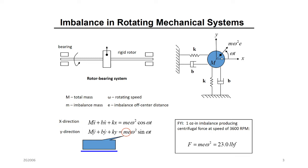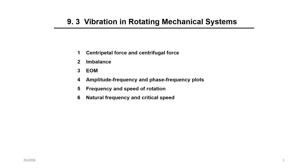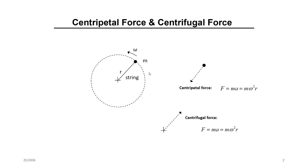What is the imbalance? The imbalance is the result of the center of gravity being away from the center of the area of the disk. When the disk rotates, this center of gravity will act as a centrifugal force.